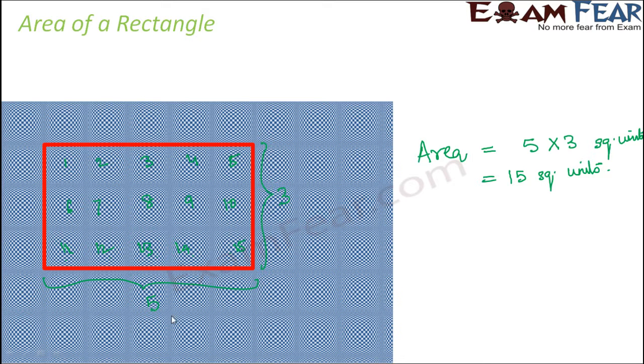So with this concept in mind, we can say that the area of a rectangle is always given by length multiplied by breadth. So in this case, 5 was nothing but length and 3 was nothing but breadth. So if you know the measurement of the length and the breadth of the rectangle, you can find out its perimeter, you can also find out its area.